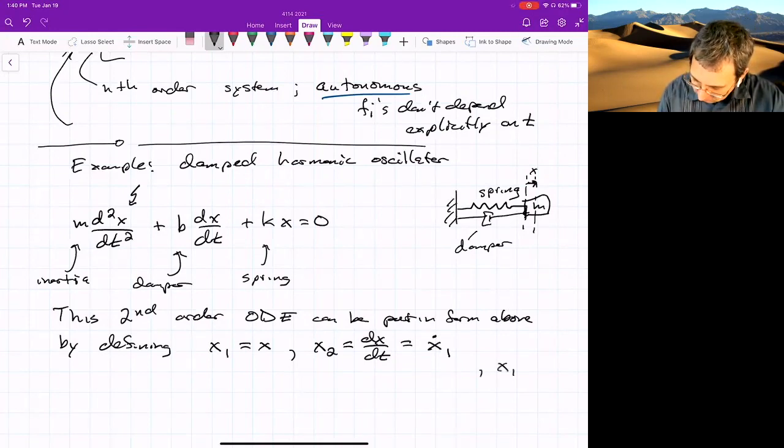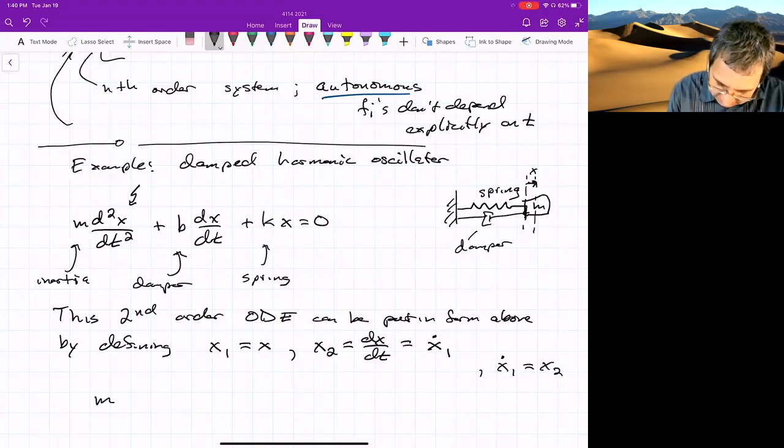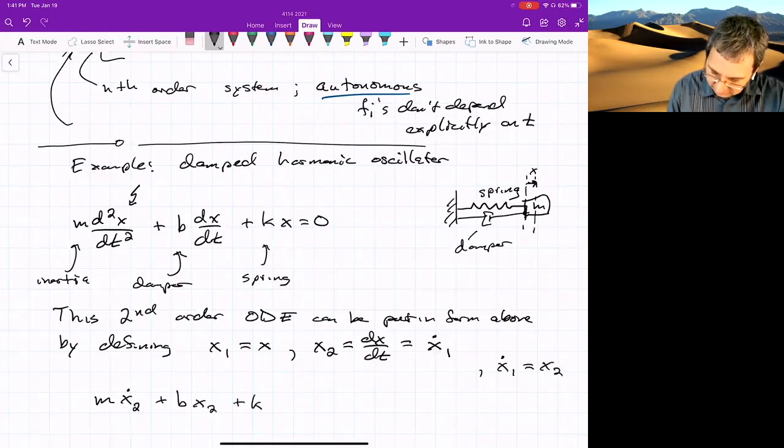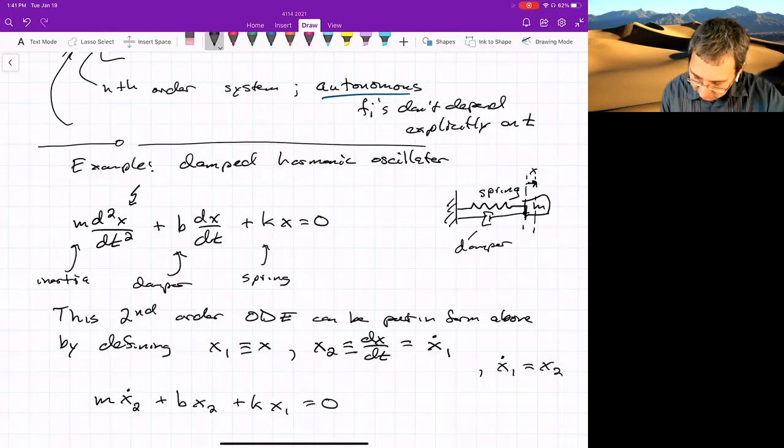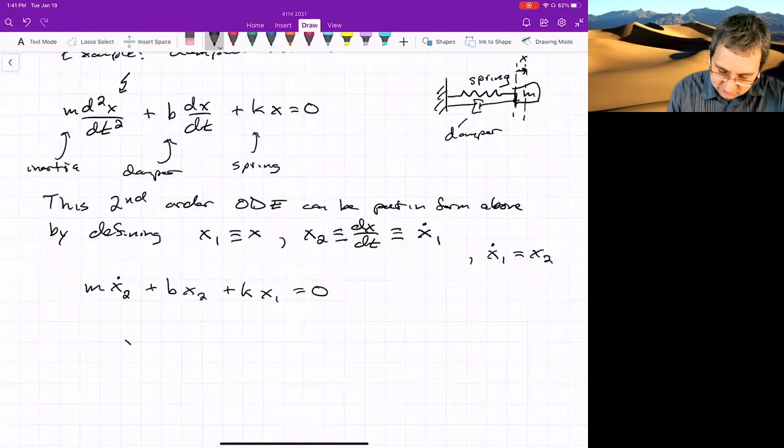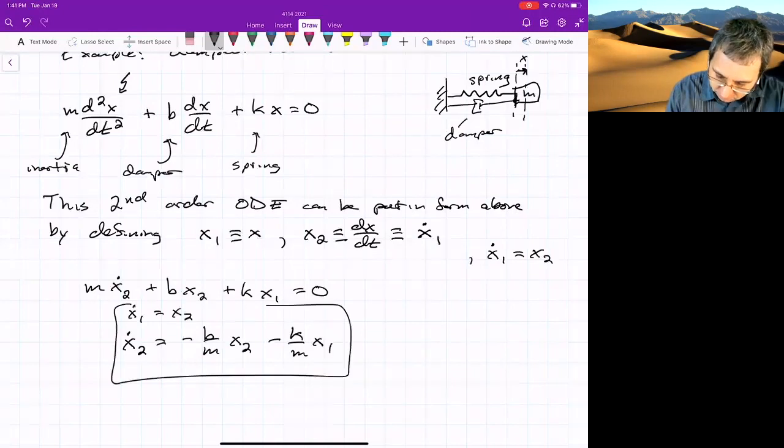And then if we write that, then in some sense, x1 dot equals x2 is our first ODE. And we have m dx dt squared, which is the same as x2 dot plus bx2 plus kx1 equals 0. So we're just rewriting a thing up above, but in terms of our new variables, x1 and x2. So x1 is defined as x, x2 is defined as x1 dot. And then we could rewrite this. So now this is x2 dot equals minus b over m x2 minus k over m x1. So if I put in x1 dot equals x2, this is in the form of what we have above.